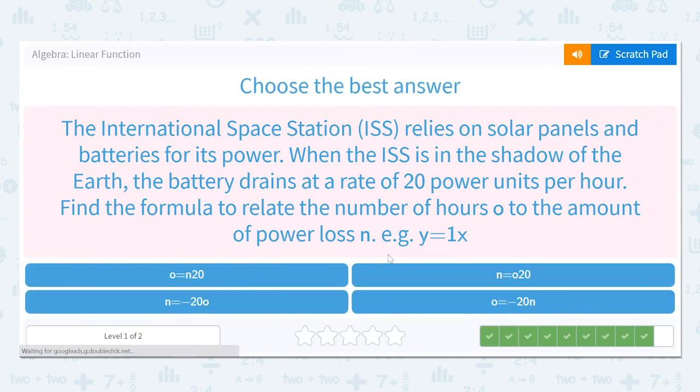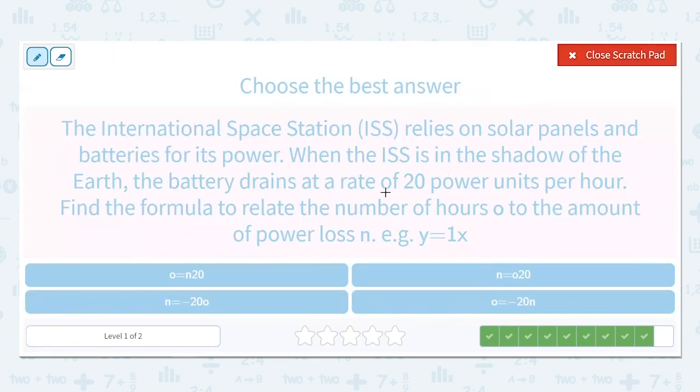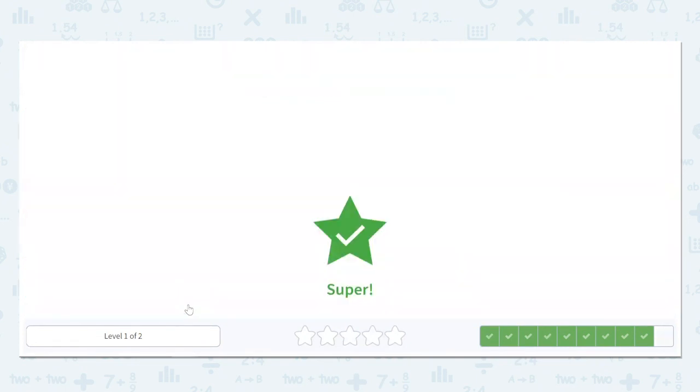One more. The International Space Station, again, relies on solar panels and batteries for its power. When the ISS is in the shadow of the Earth, it drains at a rate of 20 power units per hour. Find the formula to relate the number of hours, O, to the amount of power lost, N. So the total amount of power loss is N. It's draining, so it's losing, it's decreasing at 20 power units. So negative 20 because we're losing that. And it's doing that per hour, and the number of hours is O. So N should equal negative 20O.